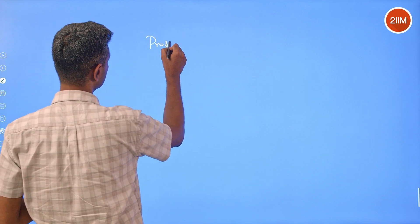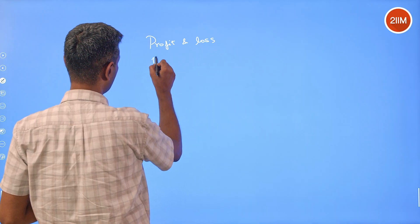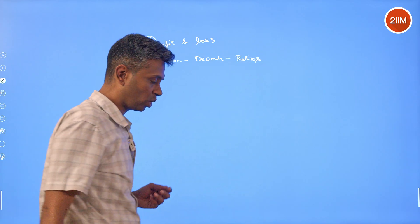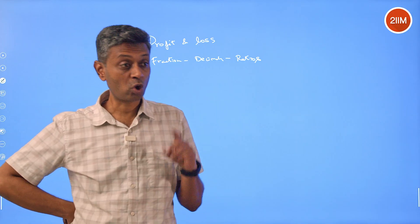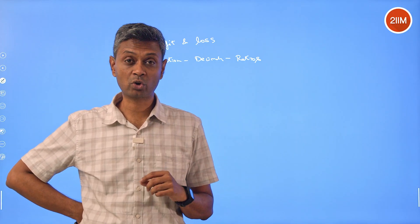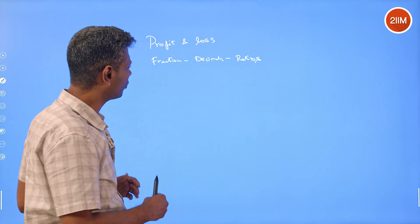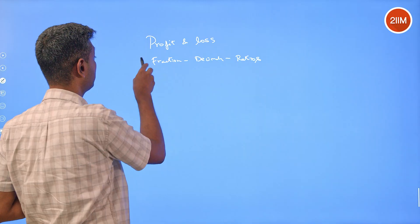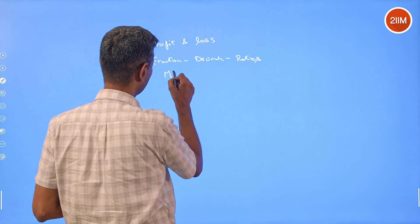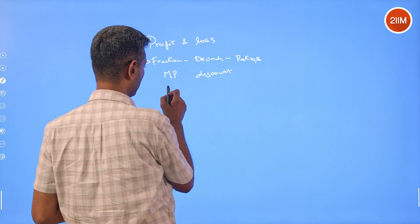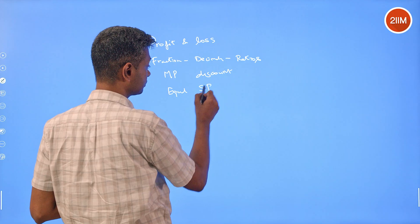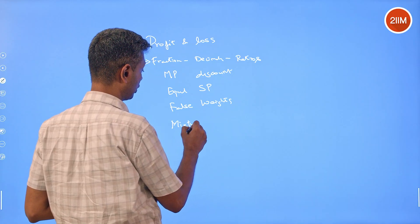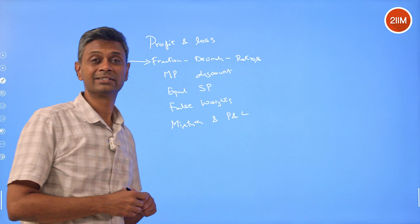For example, if you're revising Profit and Loss, start by thinking: fractions, decimals, ratios. Know that 25% profit means 1.25, meaning cost price to selling price is 4:5, so selling price is 5/4 times cost price. That's a core funda. Then the basic formula: profit divided by cost price into 100. After that, cover sub-topics: marked price and discount, questions involving equal selling price, false weights, and mixtures combined with profit and loss.